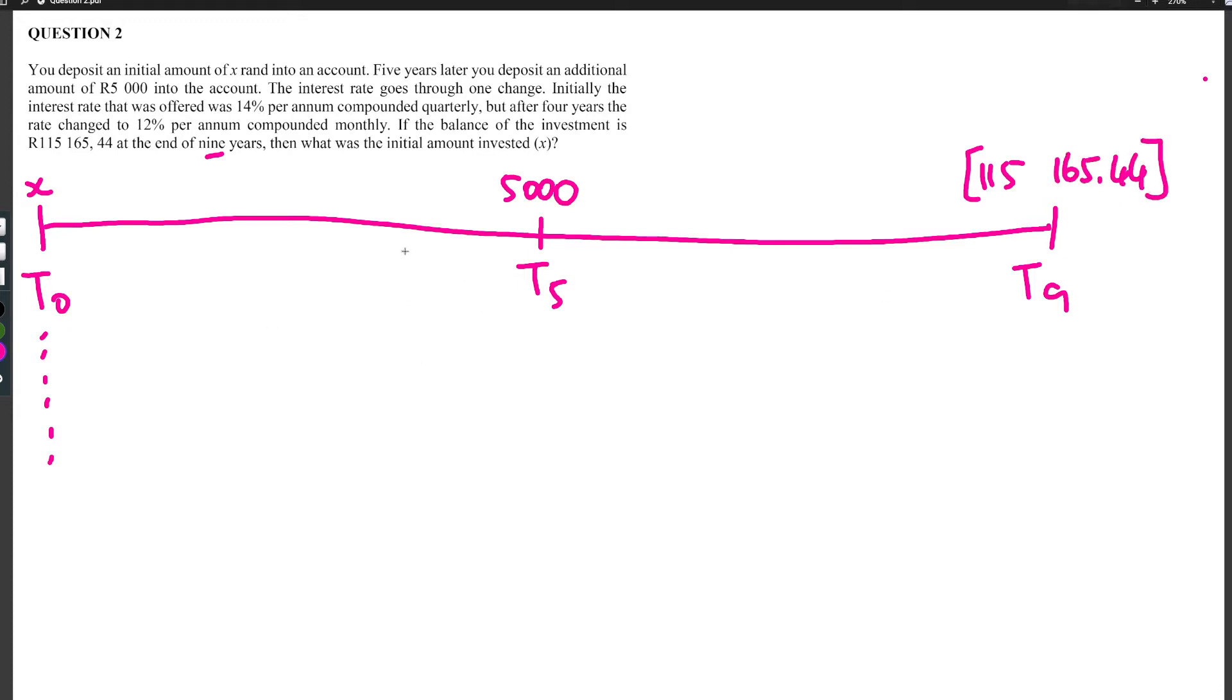And of course the interest rates change. So I think you probably had that part as well. At t4 the interest rate changed and it was 0.14, and that was given as quarterly. And for the rest of the time, the interest rate is 0.12 and that was monthly.